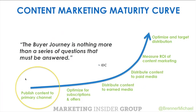This is the content marketing maturity curve. This quote from IDC is that the buyer journey is nothing more than a series of questions that must be answered. The first thing brands do is publish content to a primary channel — this is the biggest gap and one of the first steps brands need to take. Then we move into optimizing for conversions, subscriptions, and offers; distributing content via social channels; paying to distribute that content in different media outlets; measuring the ROI of your content marketing; and optimizing and targeting your distribution. I'll walk through a framework that each of you can follow to develop your own content marketing strategy and move up and to the right in this maturity curve.